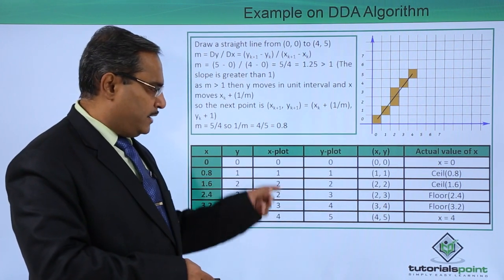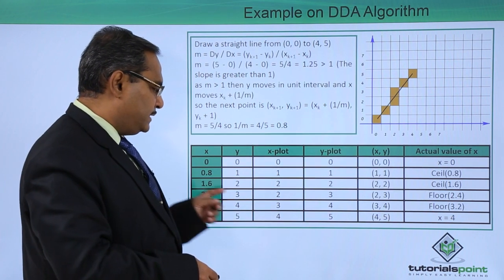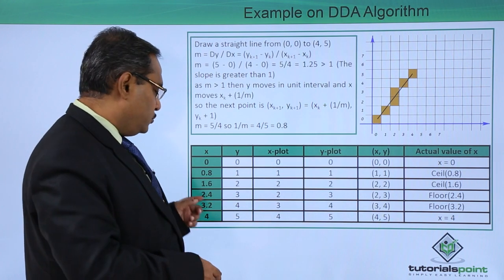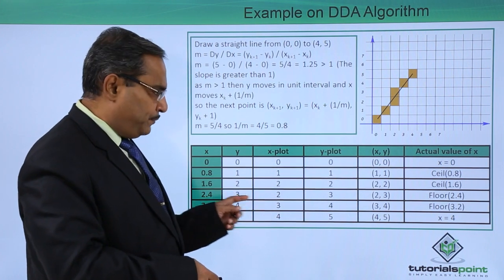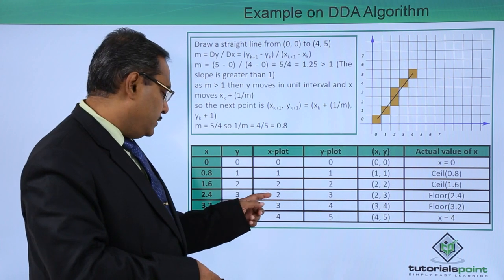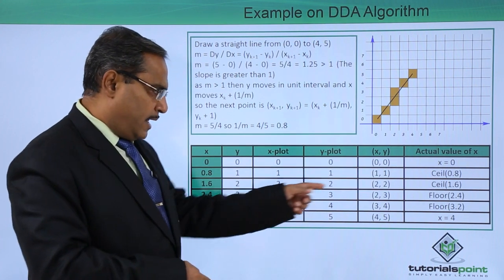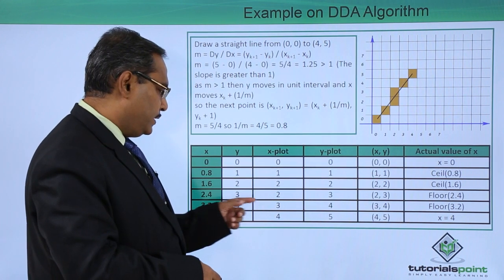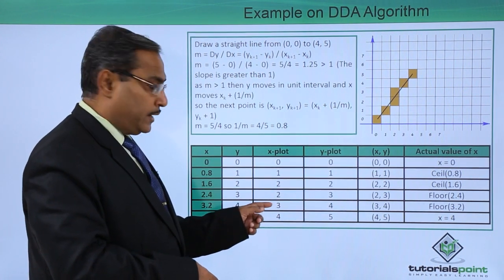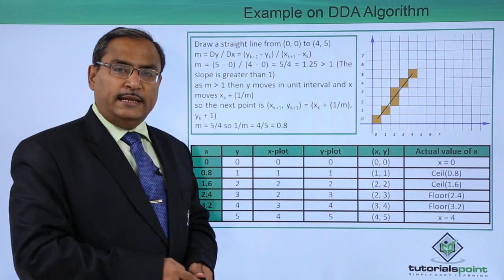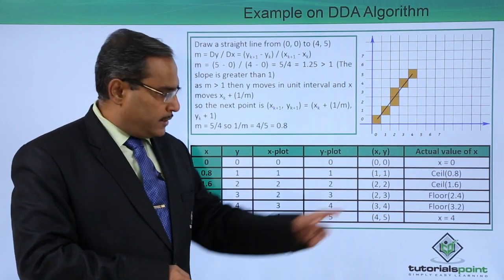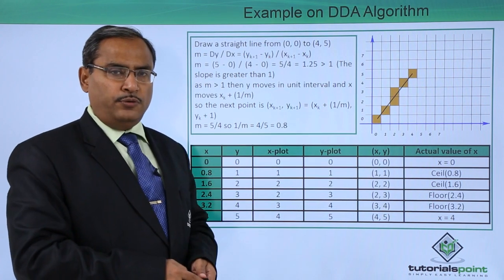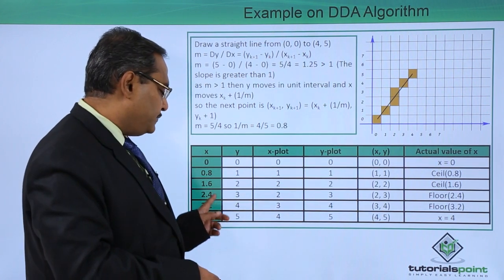Ceil of 0.8 will give me 1, ceil of 1.6 will give me 2. Floor of 2.4 will be 2, and floor of 3.2 will be 3. In this way you are getting this. What is ceil? Ceil is the smallest integer larger than this value. What is floor? Floor is the largest integer smaller than this value.